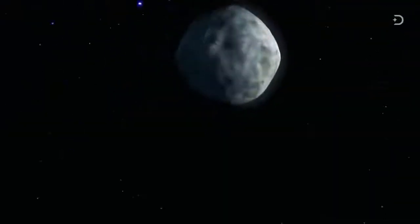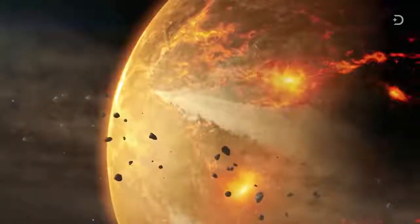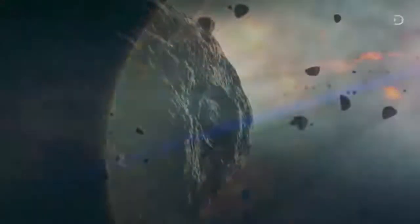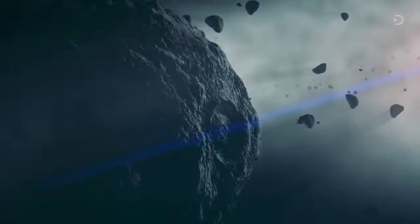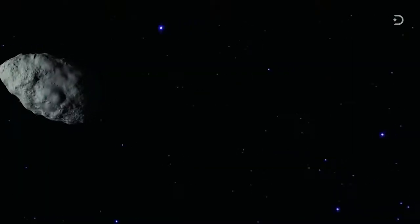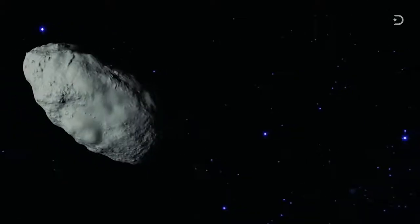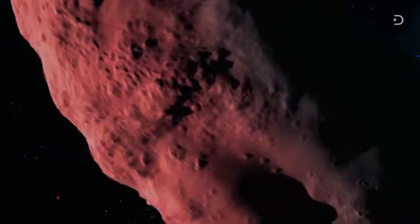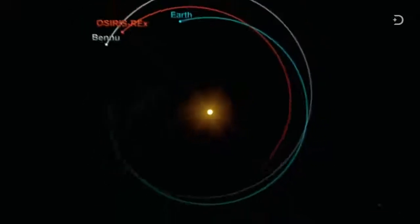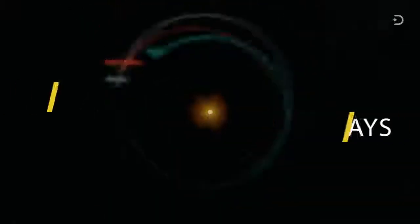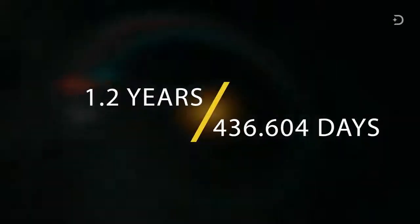In fact, there is a chance, although a slim one, that the asteroid will collide with Earth in the near future, less than 200 years from now. Bennu has a shape that looks a bit like a spinning top. It is roughly 500 meters or 1,640 feet in diameter and orbits the sun once every 1.2 years or 436.604 days.